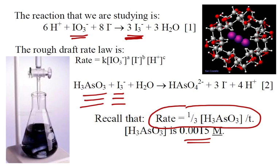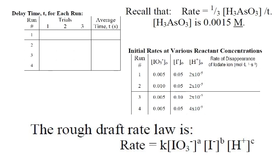So that means all we have to do to figure out the rate of any of our reactions is just take 0.0005, which is 0.0015 times one-third, and divide that by our time, and that will give us our rate. And officially that's the rate of arsenious acid.